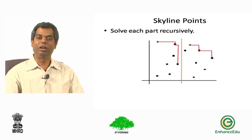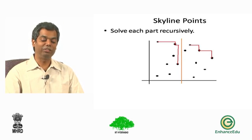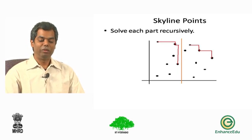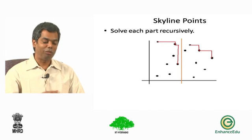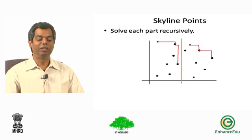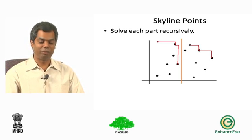So the big question now is how do I combine these two skylines to get my skyline for the overall point set? Well, notice that it is not very difficult. Some of the points in the left skyline are actually no longer skyline points once you bring in the skyline from the right side.